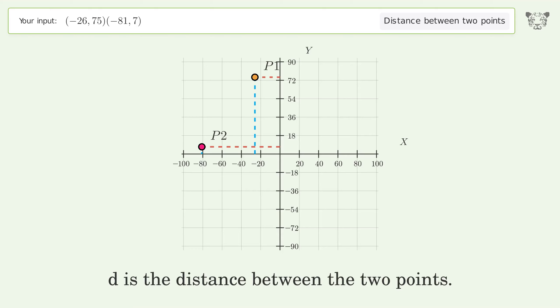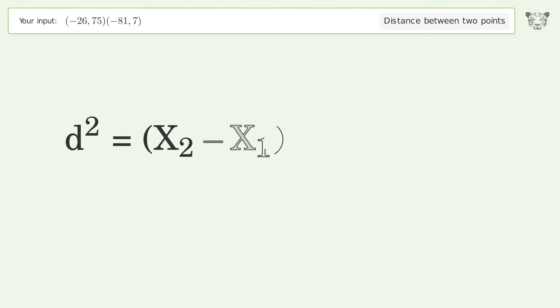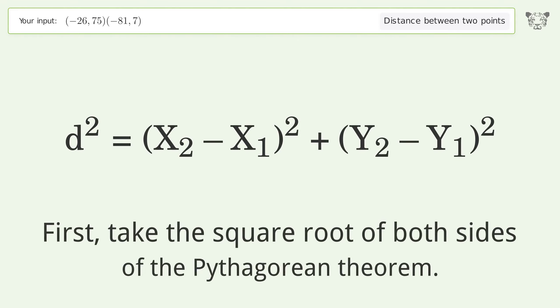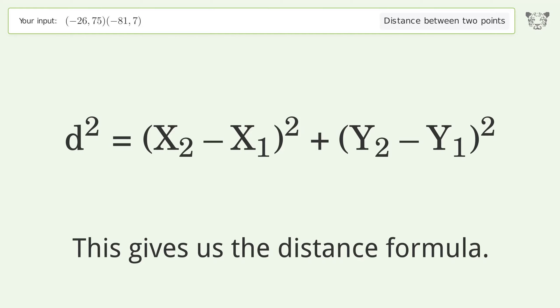d is the distance between the two points. First, take the square root of both sides of the Pythagorean theorem. This gives us the distance formula.